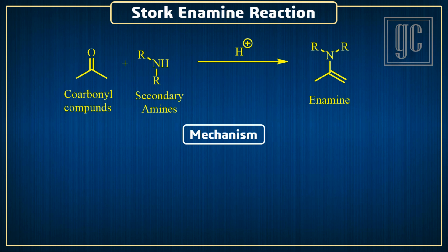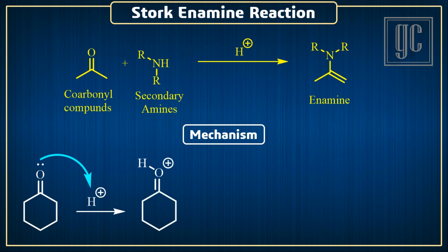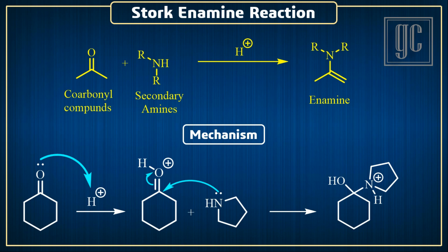Here we are taking a classical example to explain the mechanism. In the presence of acidic conditions, the carbonyl group of cyclohexanone is protonated. As a result, the electronegativity of the oxygen atom increases, and the bonding electrons of the carbonyl are more attracted by the oxygen atom. The partial positive charge on the carbonyl carbon atom increases, making it more electrophilically active. The lone pair of the secondary amine then attacks the carbonyl carbon, and as a result the pi bond shifts to the oxygen atom.